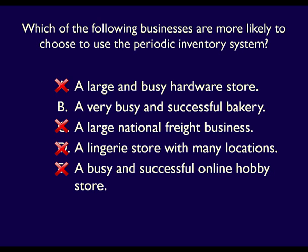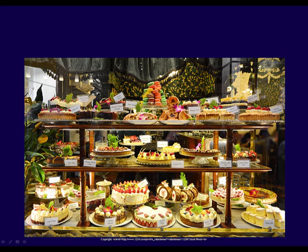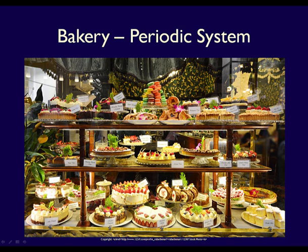The answer is not D either — a store with many locations would want to send customers to the location that has the inventory, so they need a sophisticated inventory system tracking inventory at all locations. The answer is therefore B: a bakery. They make their own inventory, such as cookies and cakes, and when they are sold out for the day, their inventory is gone. They don't need a sophisticated inventory tracking system. The periodic system would tell them how many they sold every day, and that's the information they need to decide how many to make for tomorrow.